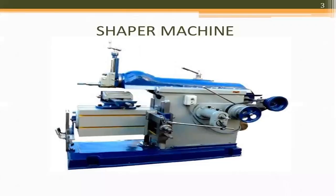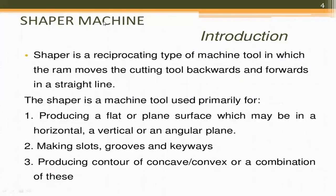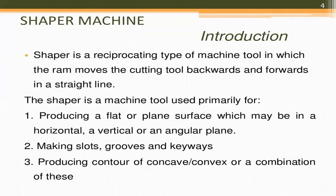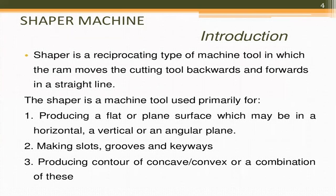A Shaper machine is a reciprocating type of machine tool in which the RAM moves the cutting tool backward and forward in a straight line. The tool moves front and backward to cut the workpiece while the workpiece remains stationary. The Shaper machine tool is used primarily for producing a flat or plain surface which may be horizontal, vertical, or angular. It is also used for making slots, grooves, keyways, and producing contours of concave and convex or a combination.